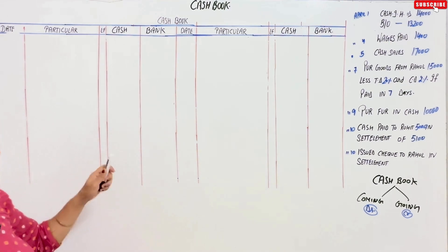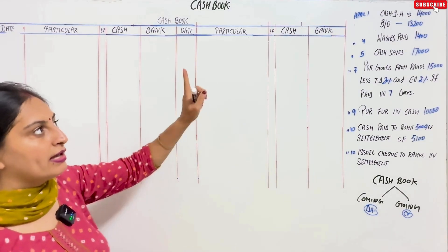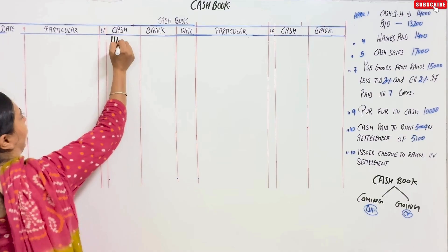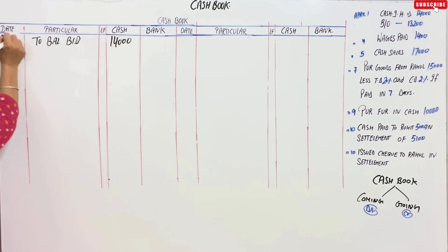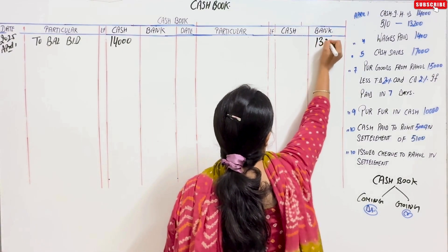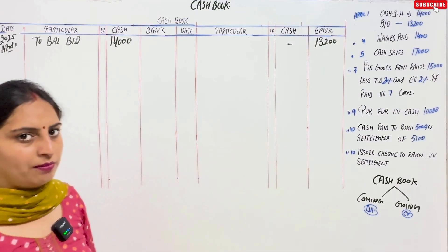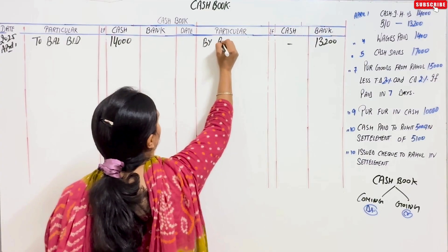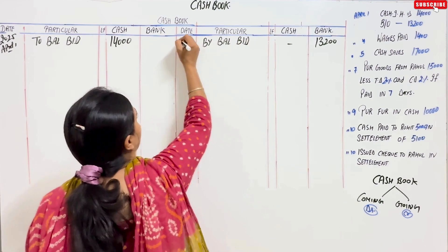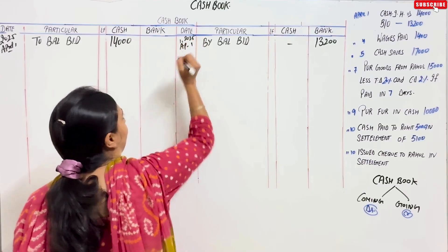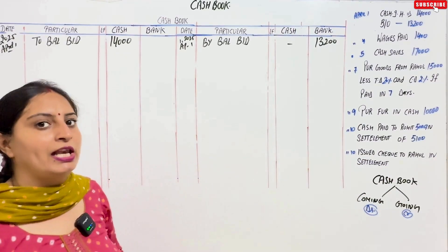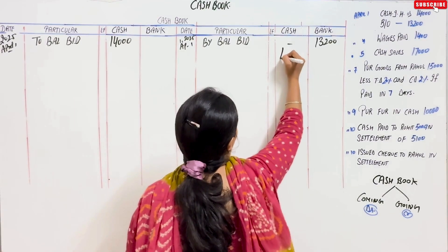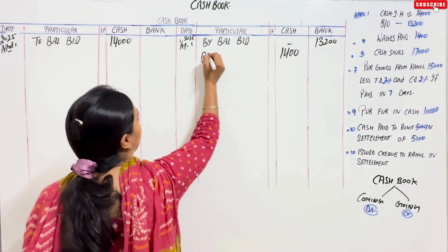Cash in hand ₹14,000 — we write this on the debit side as 'Balance b/d,' dated April 1, 2025. Bank overdraft: its balance is a liability, so it is placed on the credit side as 'Balance b/d,' April 1, 2025. Next, April 4: wages paid — cash is going out, so it is a credit side entry. Wages paid means cash is going, so we enter it on the credit side.